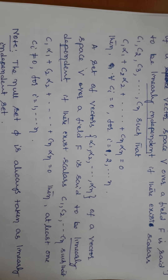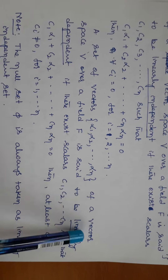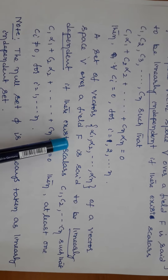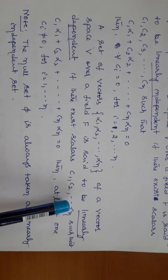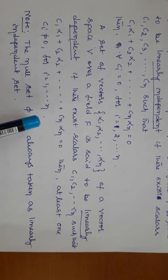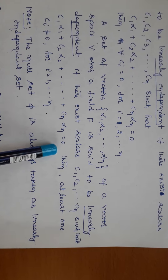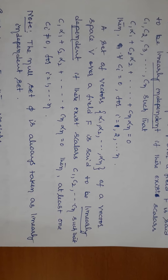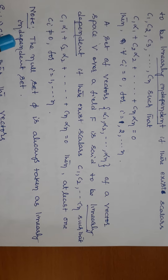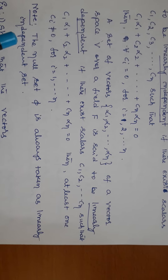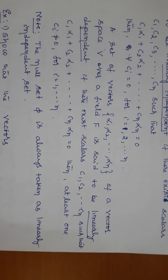Let us move to the definition of linearly dependent. Linearly dependent means a set of vectors say alpha 1, etc., alpha n of a vector space V over a field F is said to be linearly dependent if there exist some scalars C1, C2, etc., Cn such that C1 alpha 1 plus C2 alpha 2 plus etc. plus Cn alpha n equals 0, and then at least one scalar is not equal to 0 — either C1 not equal to 0, or C2 not equal to 0, or Cn not equal to 0. Then we say that they are linearly dependent.